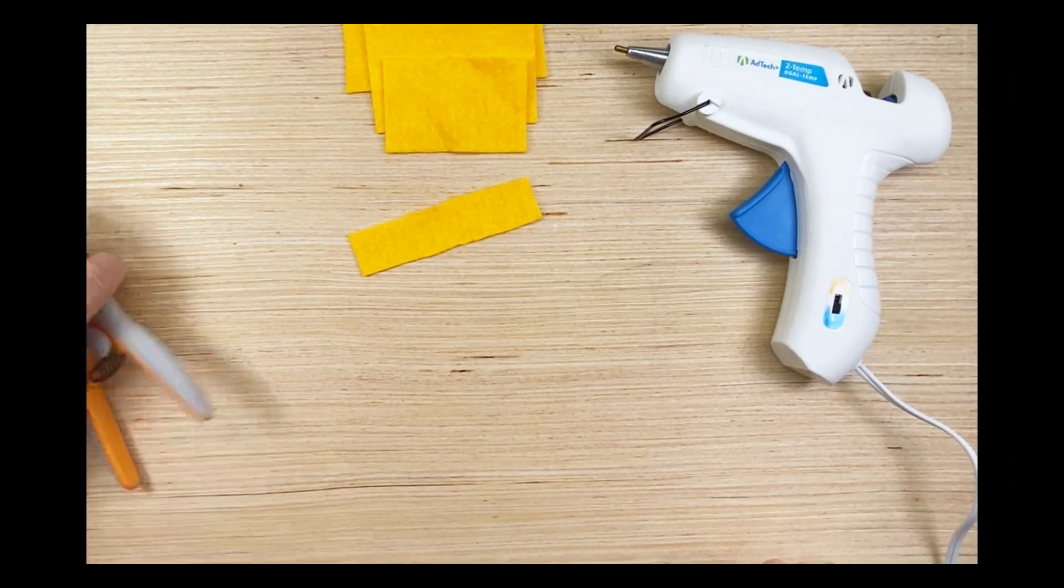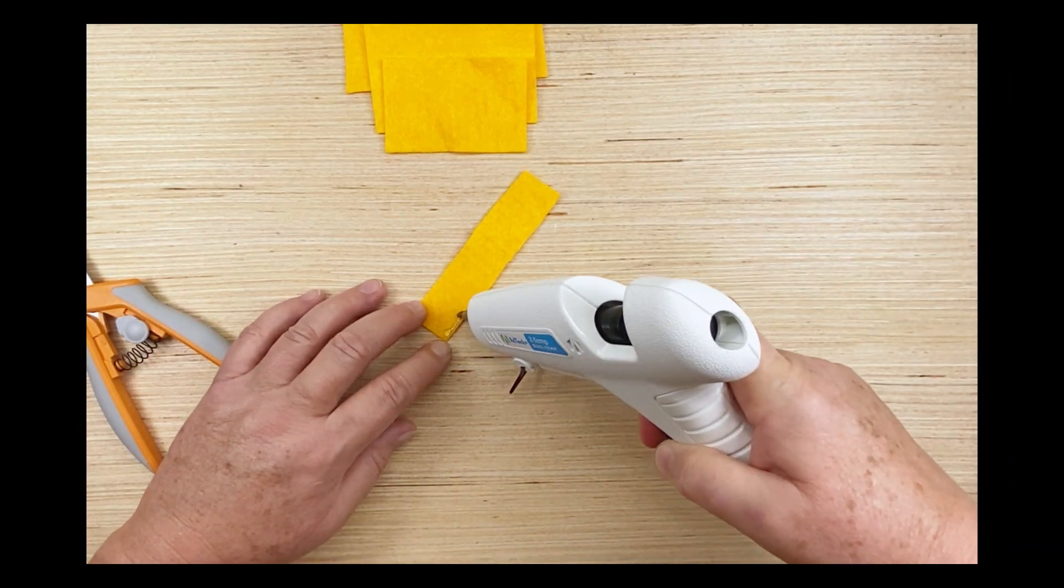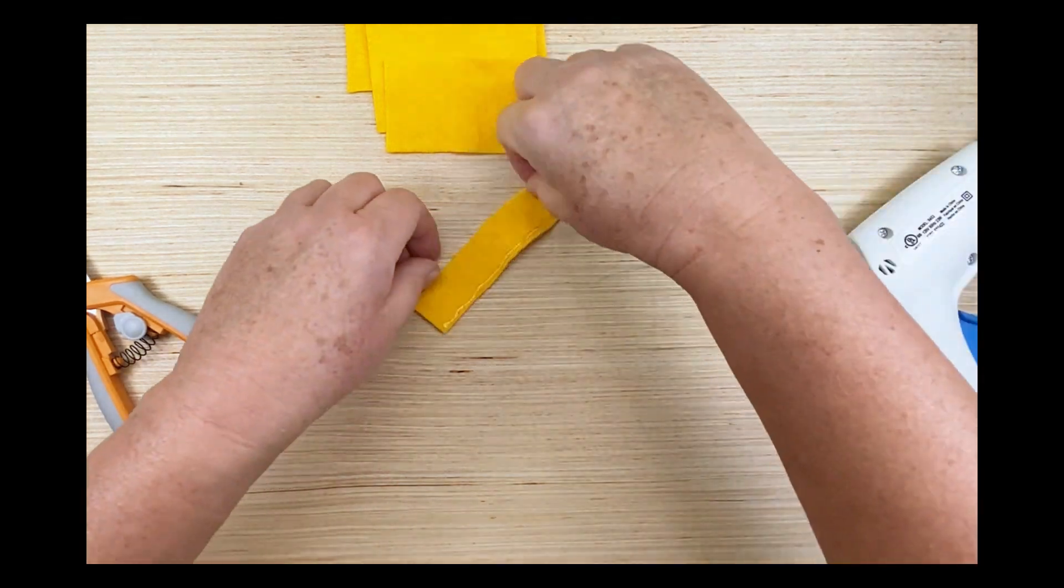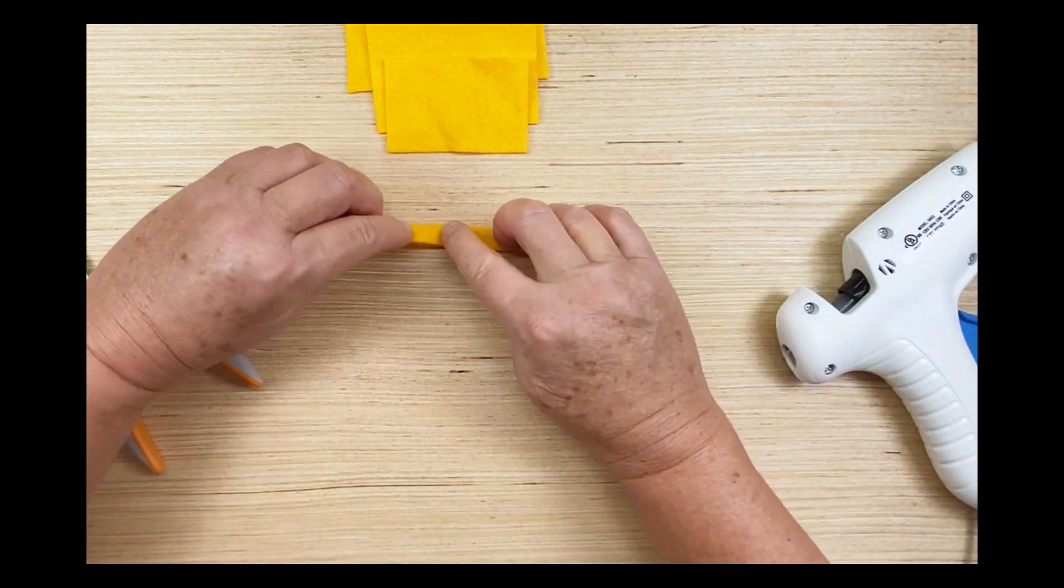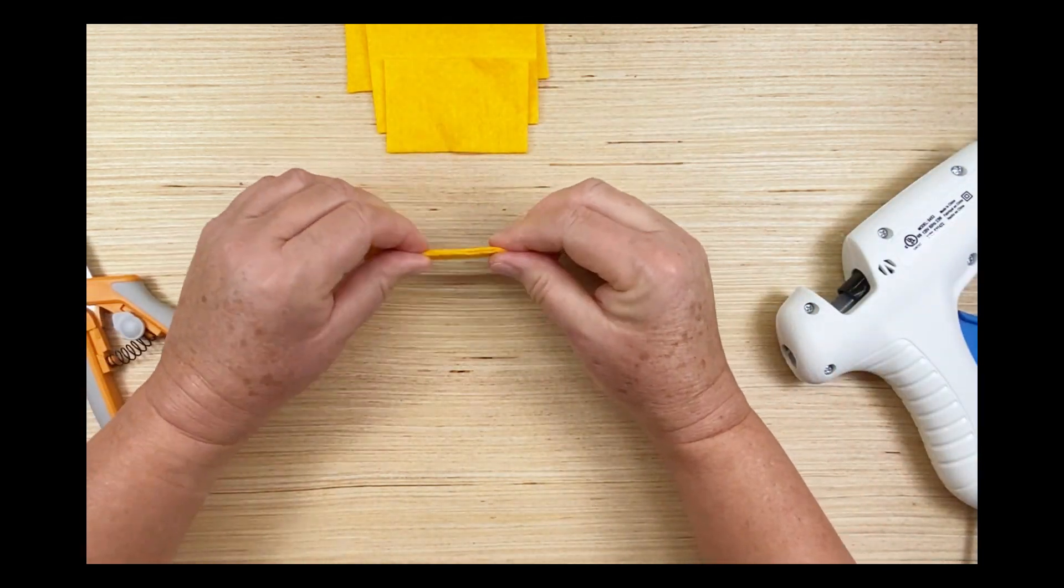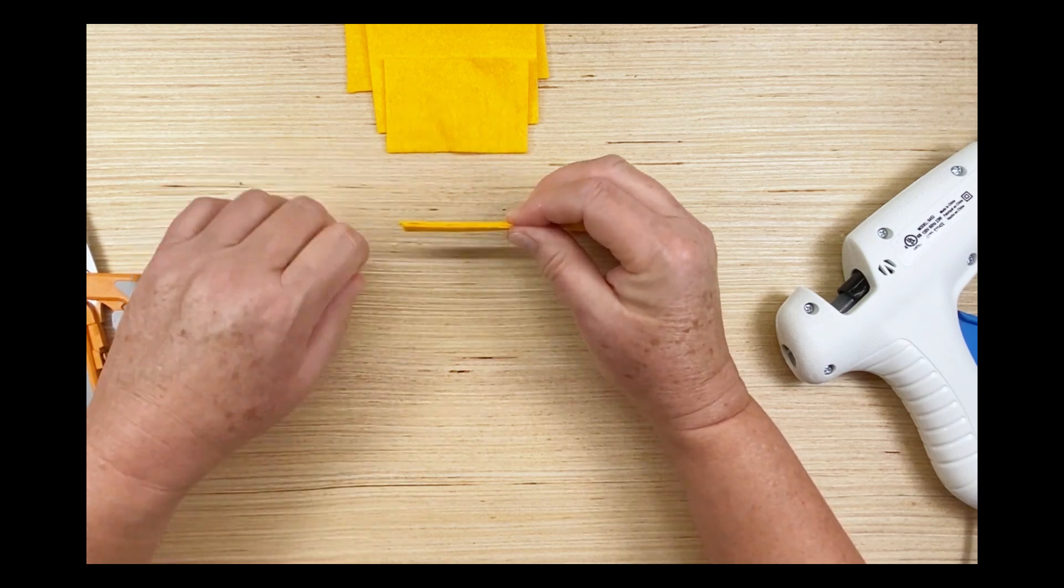We start by taking the thinnest piece of felt and we're going to put a line of glue along the bottom edge there and fold over so that the two edges meet.